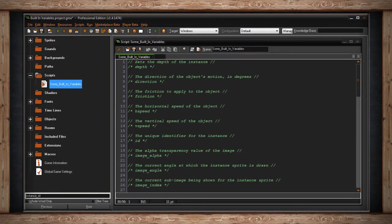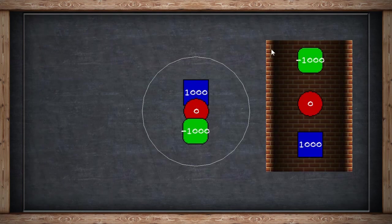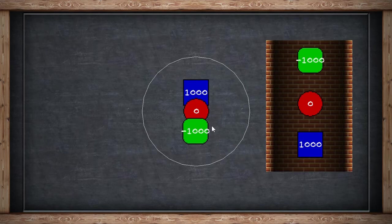Now that you know a little bit about the basics of coding, I'm going to show you some variables that are built into GameMaker Studio. Depth sets the depth of the instance — how far or how close it appears to your screen. Think of it like looking down a well: the further down the well your instance is, the more positive the number. Positive 1000 would be deep into the well, or far away from your screen. A negative number would be closer to your screen, or higher up the well.